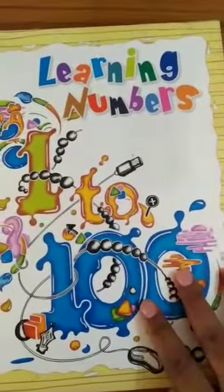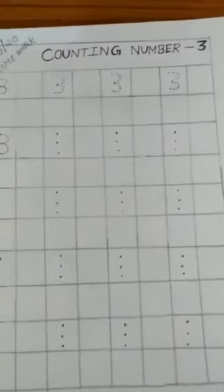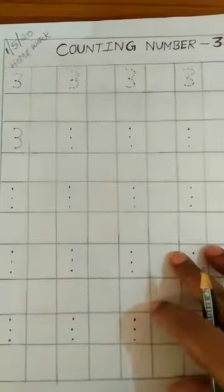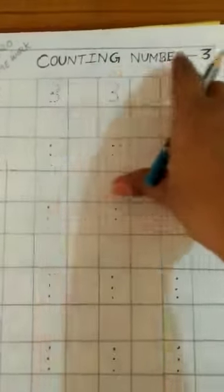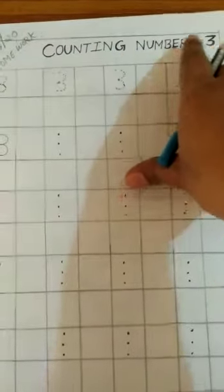I will show you now the sheet of paper that you will be doing your homework at home in your math copy. Counting number 3. I have written here counting number 3.